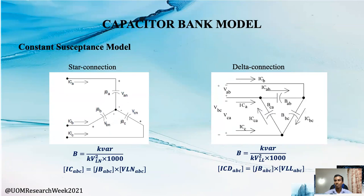For capacitor banks, we use the constant susceptance model. The susceptance of the capacitor is calculated and then used to calculate the current in the backward sweep using the equations shown in the slide.